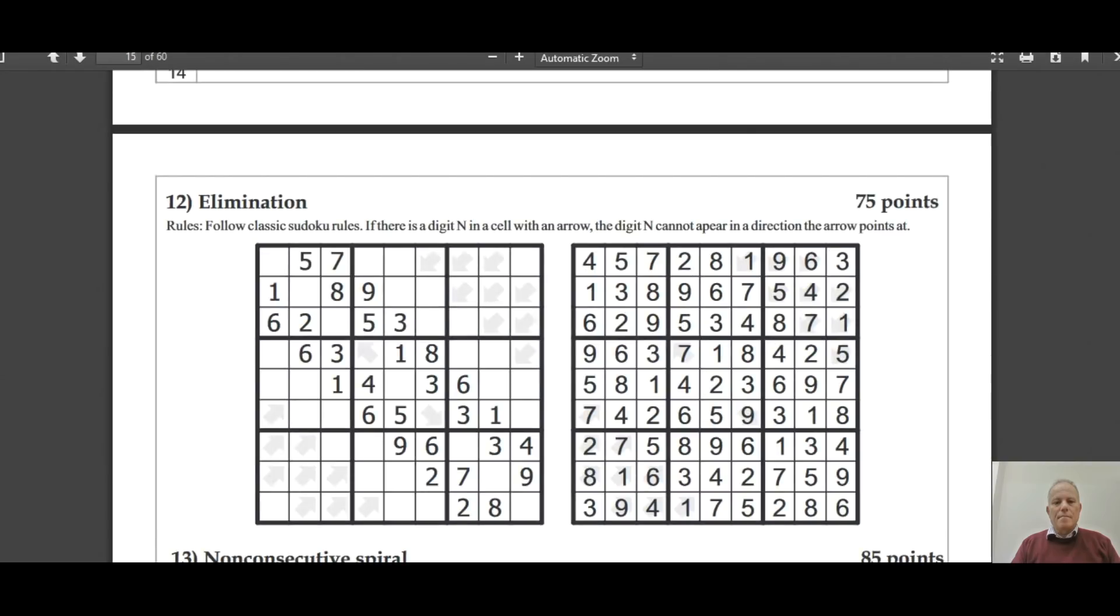Elimination - there's little gray arrows here that you may not be able to see on the screen, I can barely see them myself. If there is a digit N in a cell with an arrow, then that digit can't appear in the diagonal direction the arrow is pointing at. So it's kind of the opposite of the previous one. Pretty tricky I suspect.